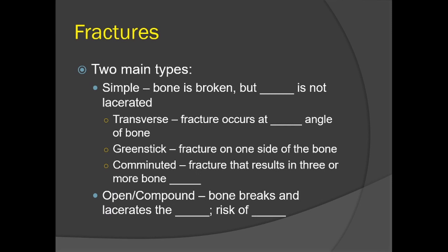Looking at fractures — just the main ones for this introductory course. Two main types: simple and open or compound. In a simple fracture, the bone is broken but the skin is not lacerated. Three basic types of simple fractures: transverse, where the fracture occurs at a right angle to the bone — imagine a linebacker hitting a running back's femur from the side; green stick, a fracture on one side of the bone only, like a green branch from a tree that frays on one side but stays intact on the other; and comminuted, resulting in three or more bone fragments from heavy blunt force or crushing.